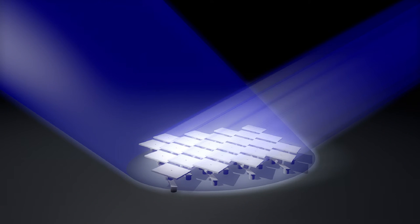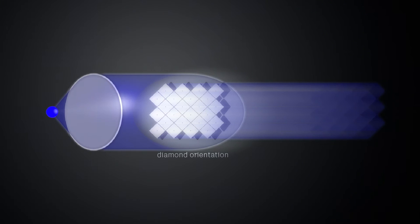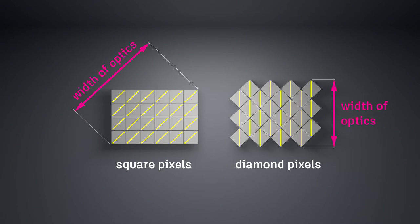The advantage of the diamond orientation of micromirrors is that the illuminating light source can be moved in line to the short edge of the frame. This reduces the cross-section of light needed to illuminate the micromirror array, which reduces the size of the optics and makes the entire device more compact.